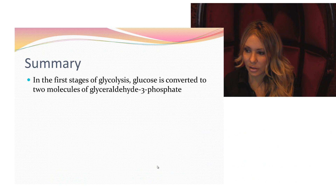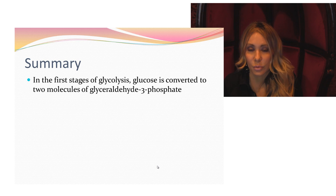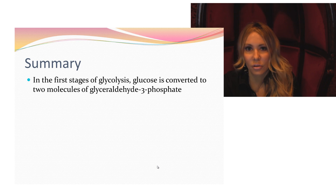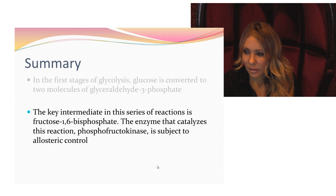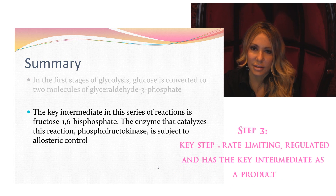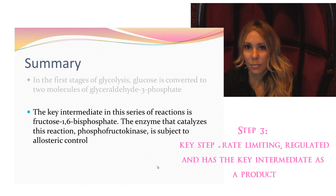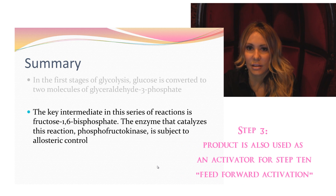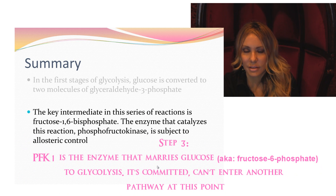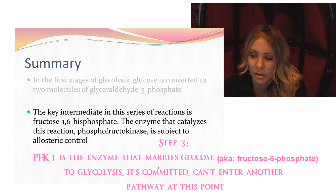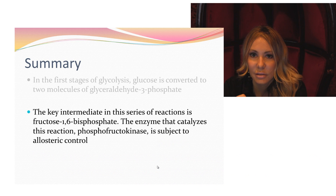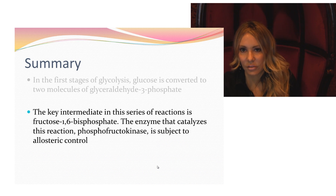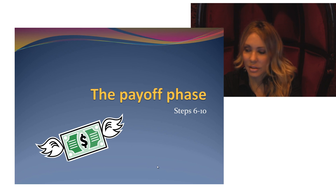As a summary of the first stages of glycolysis: glucose is converted to two three-carbon molecules of glyceraldehyde 3-phosphate, which is a triose aldotriose sugar. The key intermediate from step three is fructose 1,6-bisphosphate, which will also be used in feedforward activation of pyruvate kinase at step 10. The enzyme catalyzing the most important rate-limiting step is PFK-1; PFK-2 is regulatory, and PFK is subject to both allosteric and covalent modification for control.